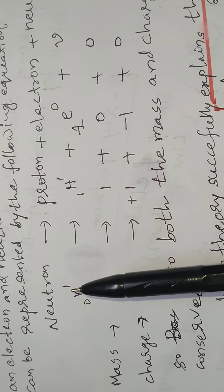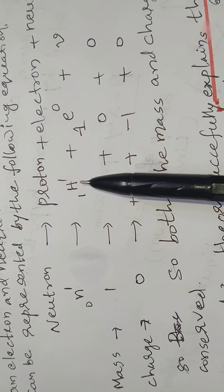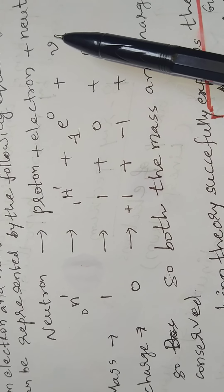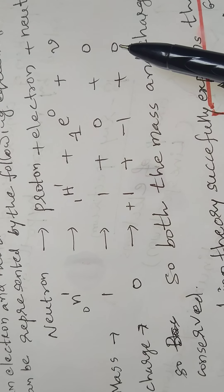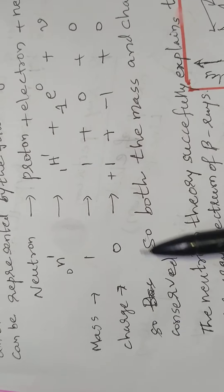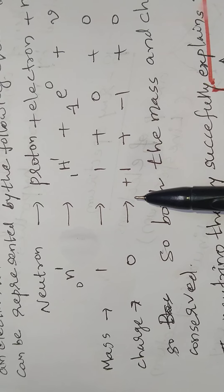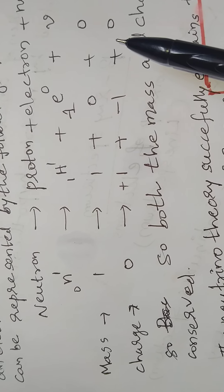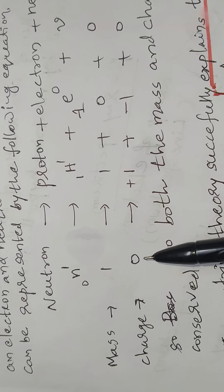Considering charge: the proton has charge plus one, the electron has charge minus one, and the Neutrino has charge zero — it is a chargeless or neutral particle. So zero equals one minus one plus zero, which equals zero. Therefore, charge is also conserved.